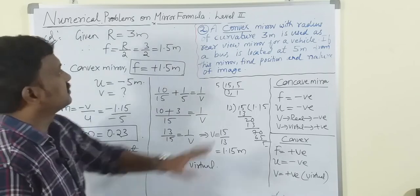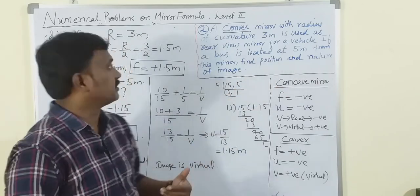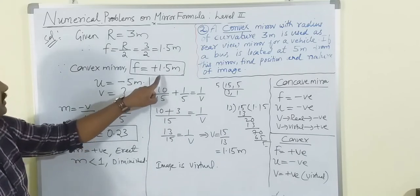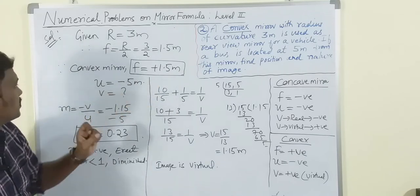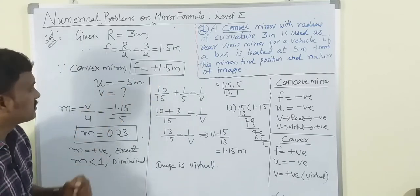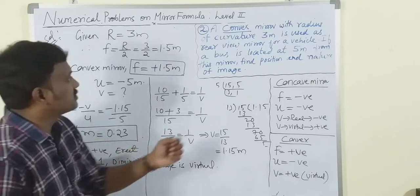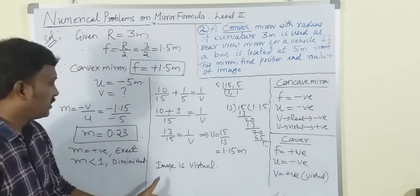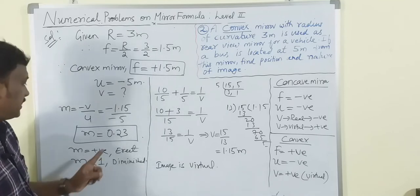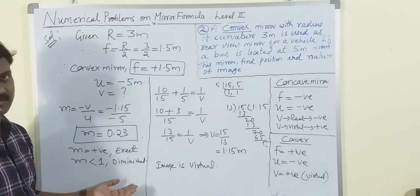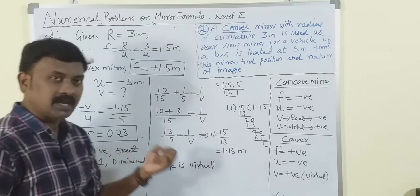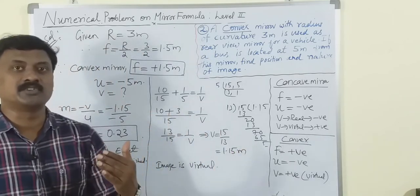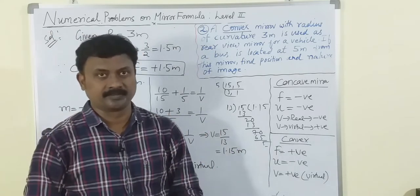So for this convex mirror problem: f was taken as positive, u as negative. The image is virtual, erect, and diminished - these are exactly the characteristics of the image formed in case of a convex mirror.